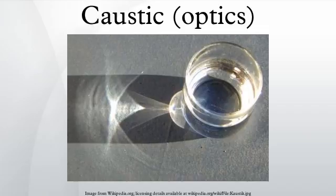A common situation where caustics are visible is when light shines on a drinking glass. The glass casts a shadow, but also produces a curved region of bright light. In ideal circumstances, a nephroid-shaped patch of light can be produced.